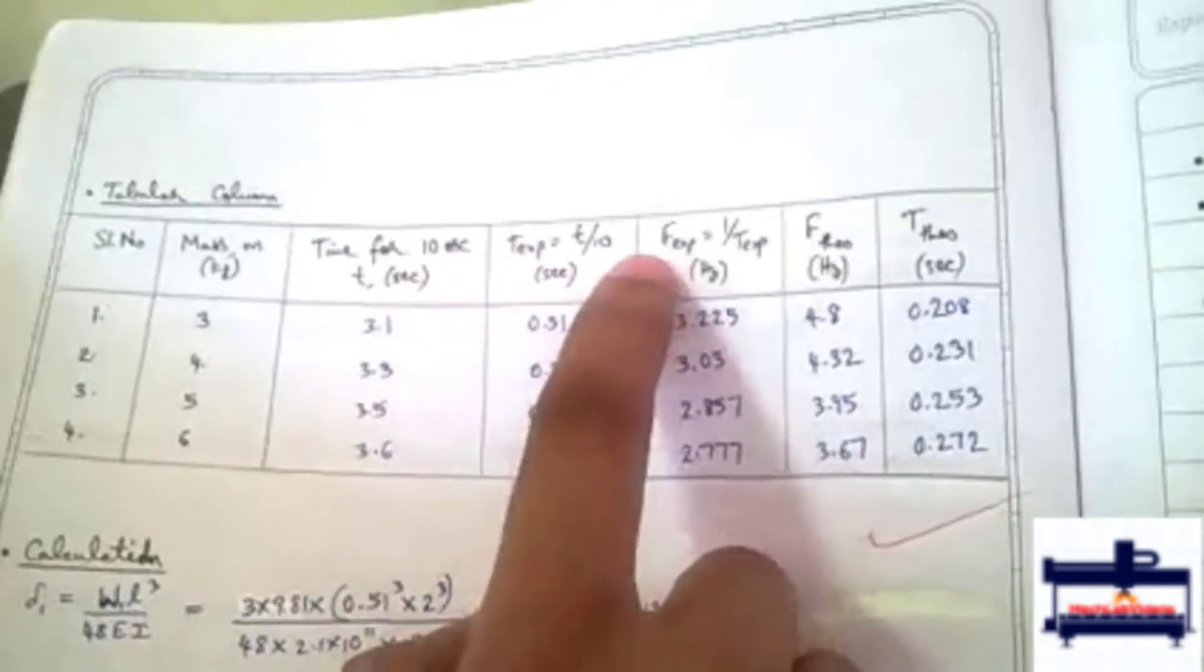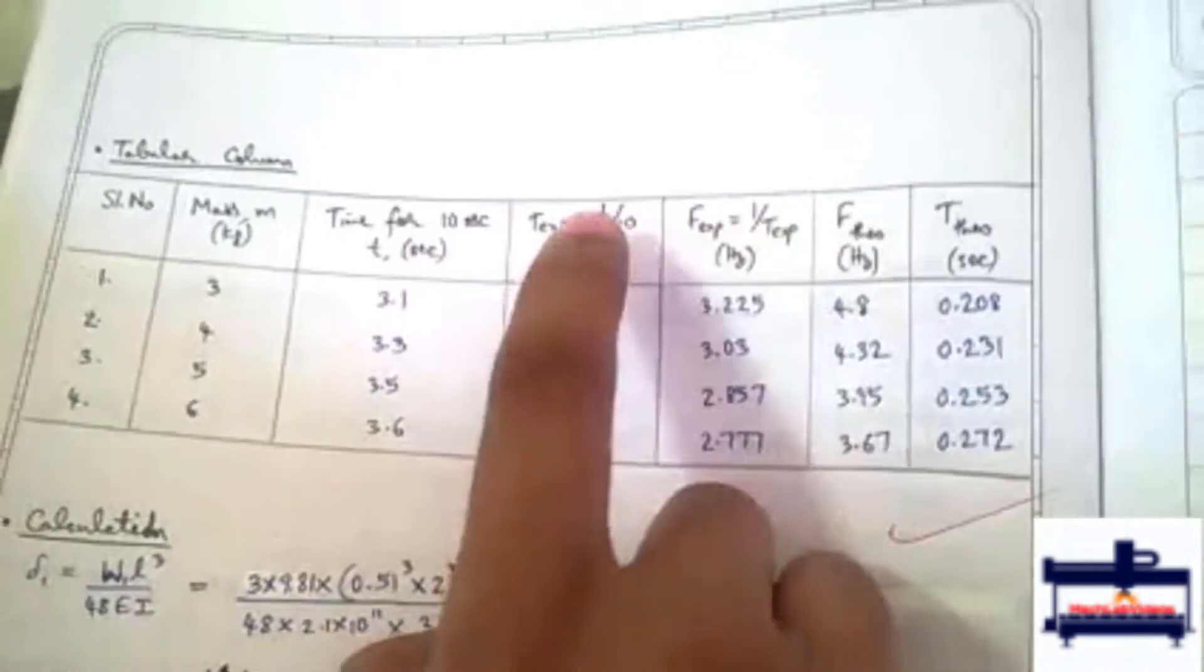Experimental time period is time taken for 10 oscillations divided by 10. F experimental is 1 by time, T experimental.